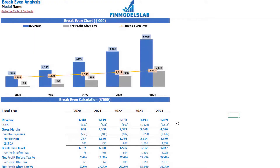On the break-even tab, you may find the calculation of the revenue break-even level and a break-even chart. In this particular use case, you may find that the revenue break-even level is less than the actual revenue calculation — this means that the company is profitable.